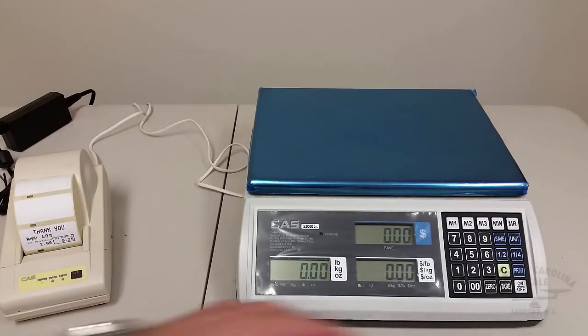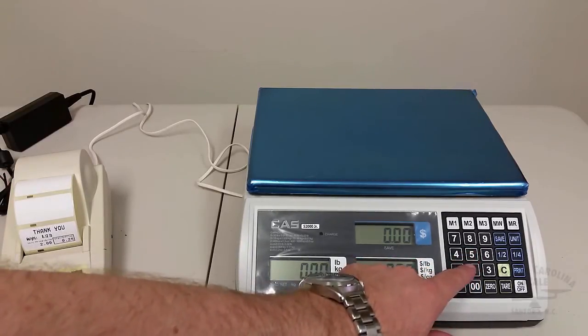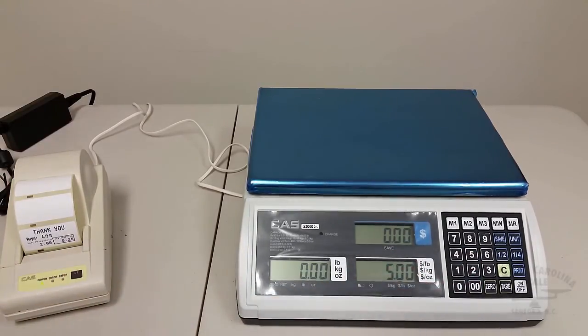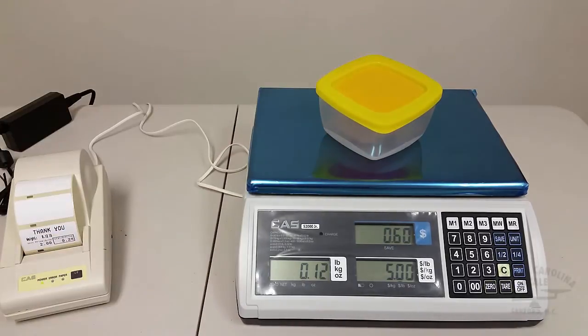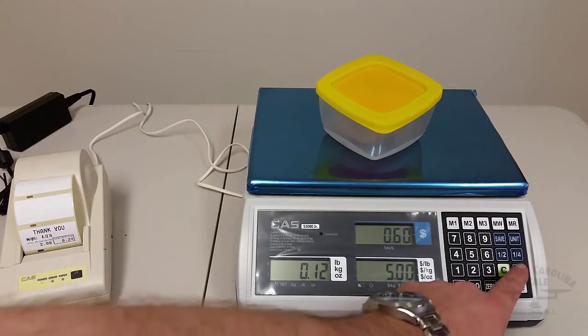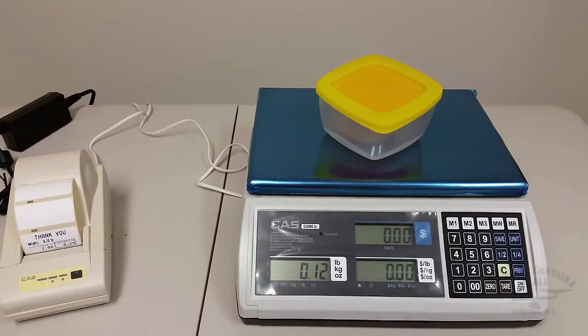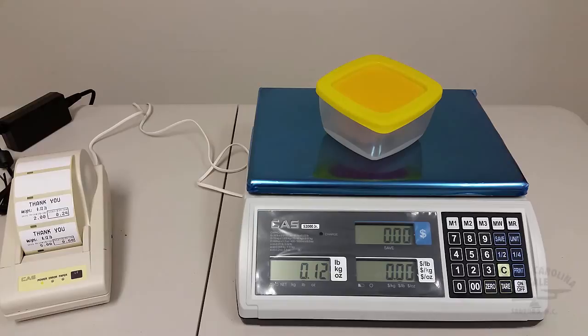And there you can see the label that we generated. And we'll do another one. And now we have our S2000 Junior set up to work with the DLP50 label printer so that it's a complete system plug and play ready to go.